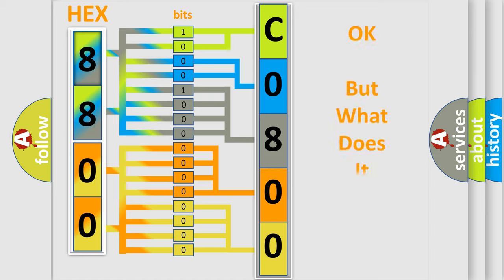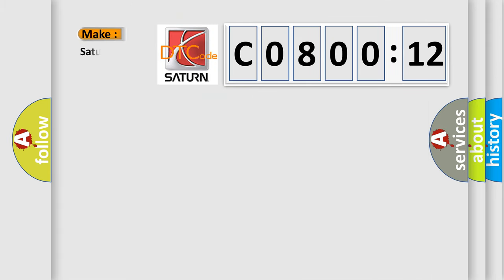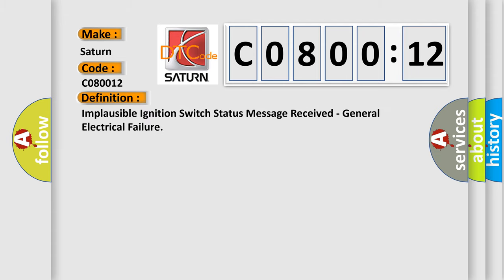The number itself does not make sense to us if we cannot assign information about it to what it actually expresses. So, what does the diagnostic trouble code C080012 interpret specifically for Saturn car manufacturers? The basic definition is implausible ignition switch status message received, general electrical failure.